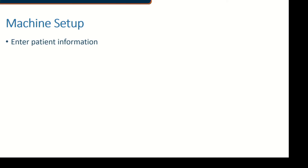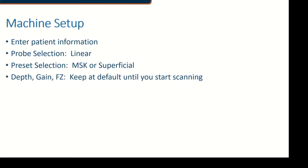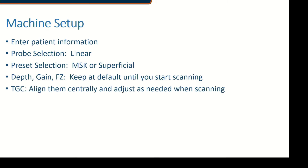For machine setup, the usual applies: enter your patient information, and select the linear probe for any of these structures. There is a preset for MSK — choose MSK when available, or superficial if MSK is not available. The main difference is the starting depth. Ensure your depth, gain, and focal zone are at default before you start scanning, and your TGCs are aligned centrally. You can adjust all of that as needed when you begin scanning.